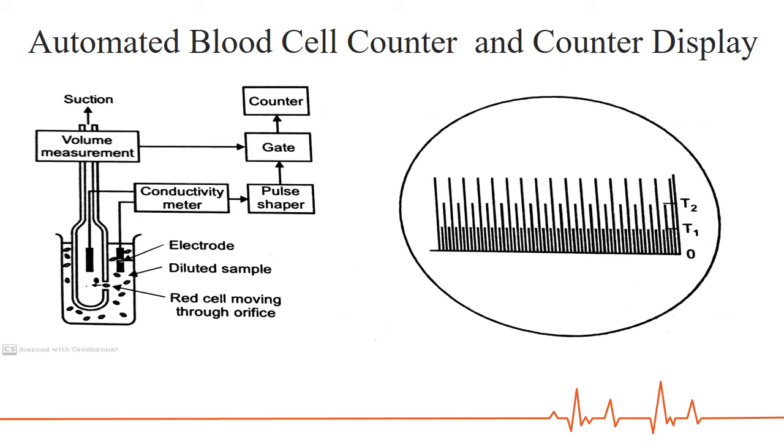During the operation of the instrument, the threshold is first set to 0 and the counter output is given by the total number of particles, WBCs and the RBCs together with the platelets per liter. Then the next step is to set the threshold to T1 and now the counter gives total number of RBCs and WBCs per liter. And last, the threshold is set to T2 and the counter just reads only the WBC count per liter.